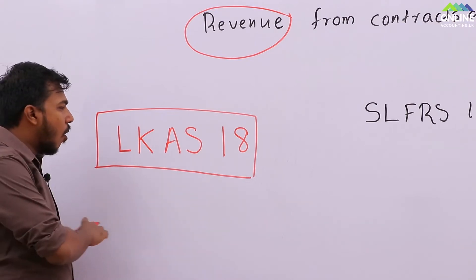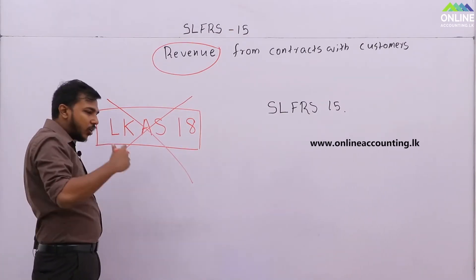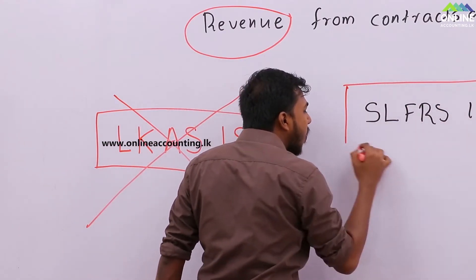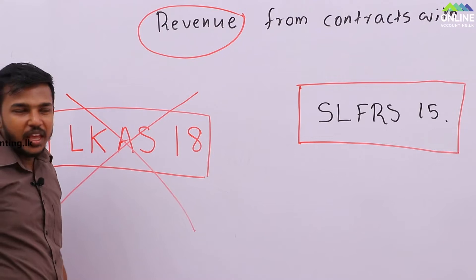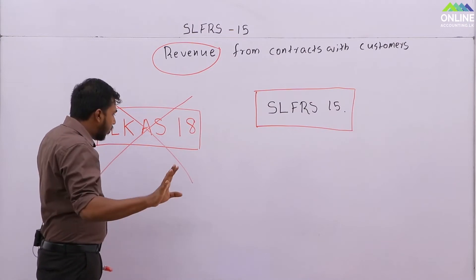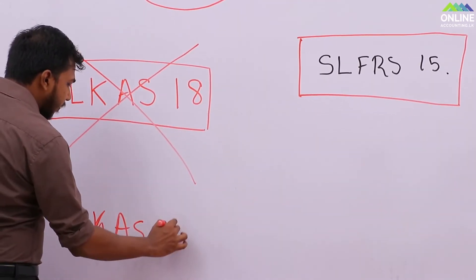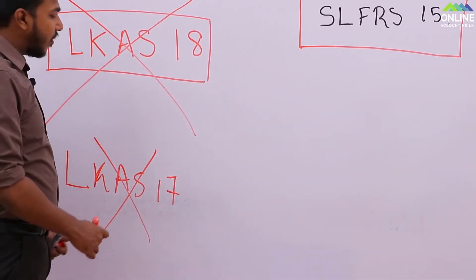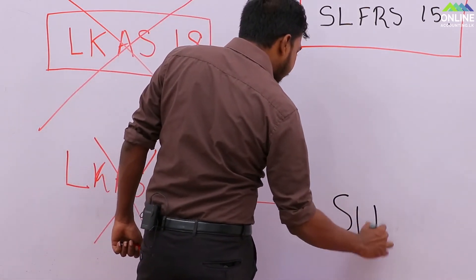LKS 18 is already abolished and not in use right now because globally they have introduced IFRS 15. So in Sri Lanka, we have adopted this revenue standard as SLFRS 15. Not only LKS 18 — we also no longer have LKS 17 for accounting for leases. Instead of LKS 17, now we have SLFRS 16.